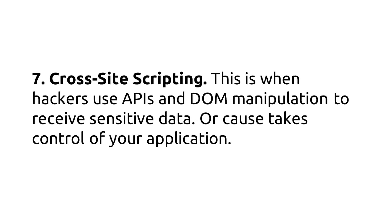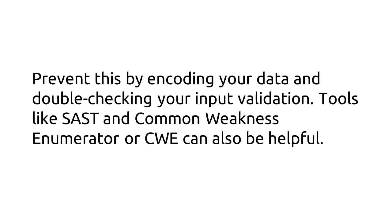Number 7: Cross-site Scripting. This is when hackers use APIs and DOM manipulation to receive sensitive data or take control of your application. Simply, it allows them to hijack your account and perform bad actions on your behalf. Prevent this by encoding your data and double-checking your input validation. Tools like SAST and Common Weakness Enumeration, or CWE, can also be helpful.